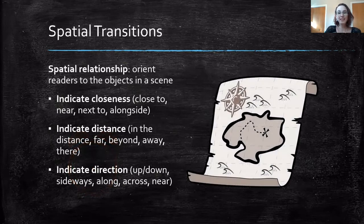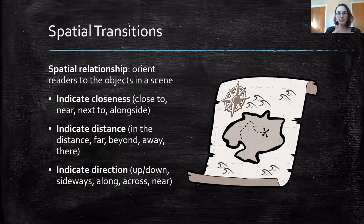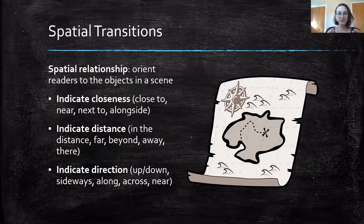The next type are spatial transitions, which are really about thinking about space — where things are happening. You orient readers to objects in a scene, indicating whether something is close or far, up or down. You're essentially creating a map in your reader's mind of where they are in relation to everything else and everyone else in the room.